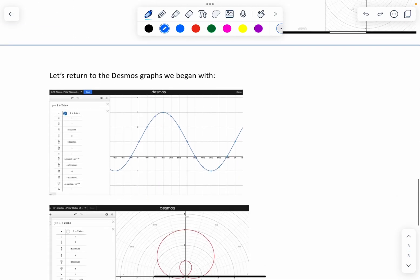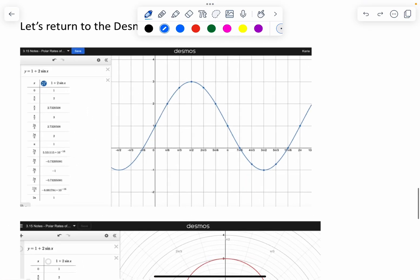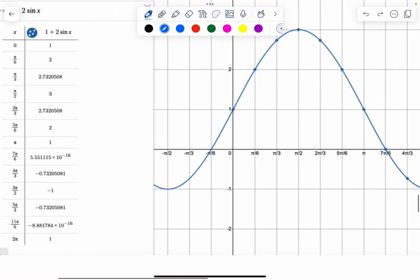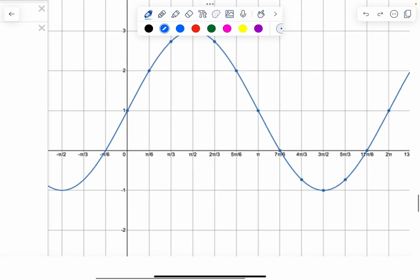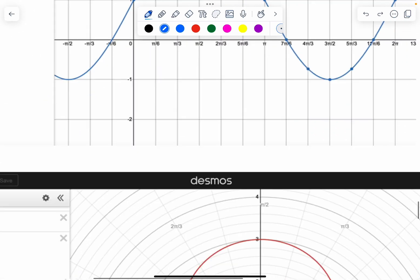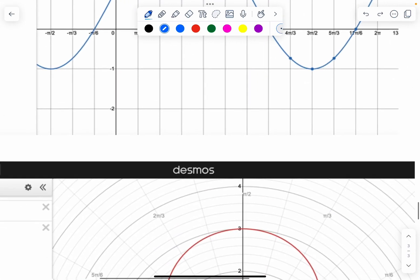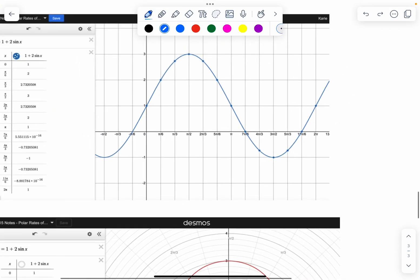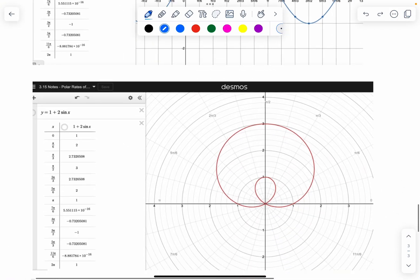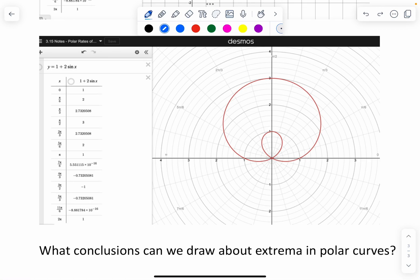So we want to come back to the Desmos that we started with at the beginning. We still have these points that they put on here and this curve. Here's that equation graphed as a rectangular function, and then here's what happens when we graph it in the polar world.